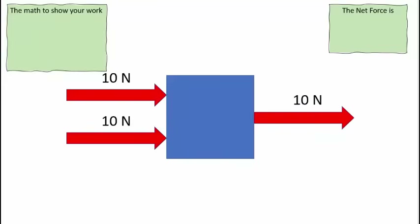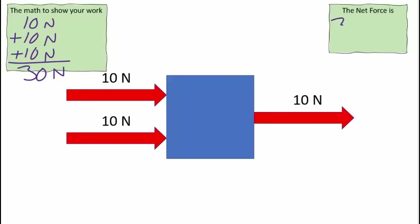What if one person was pulling instead of pushing? Would that change anything? If you had two people pushing on a wagon and a third person pulling on that wagon, we would still add all those together because they're all moving in the same direction. The math: 10 newtons plus 10 newtons plus 10 newtons. The magnitude of the force would be 30 newtons. When we write it down, we say 30 newtons to the right — we have to give that direction. This is an unbalanced force.